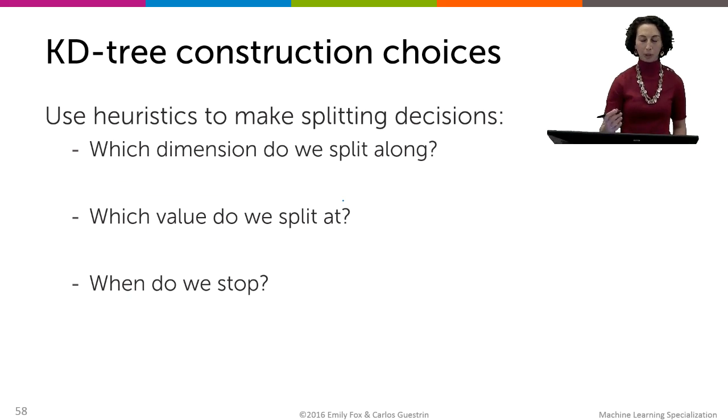But there are lots of important choices. That's kind of been the theme of this module. And it continues to be true even when we're talking about these data structures like KD trees. Examples include how are we going to figure out which dimension to split on, what value to split on, and when are we going to stop splitting.